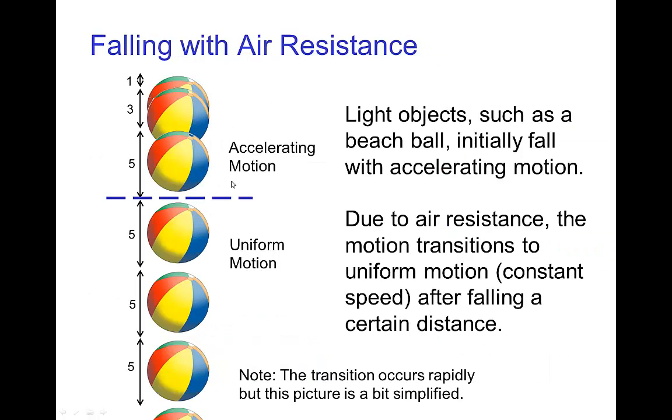To show that in another way, if we have an object that's falling, as soon as the air resistance becomes comparable to the weight, the transition is to uniform motion. And because air resistance increases so rapidly with speed, that transition tends to occur rather abruptly. So it's not instantaneous, kind of as I've shown here, but the transition is still rather abrupt. So it's as if the acceleration turns off and we have uniform motion.